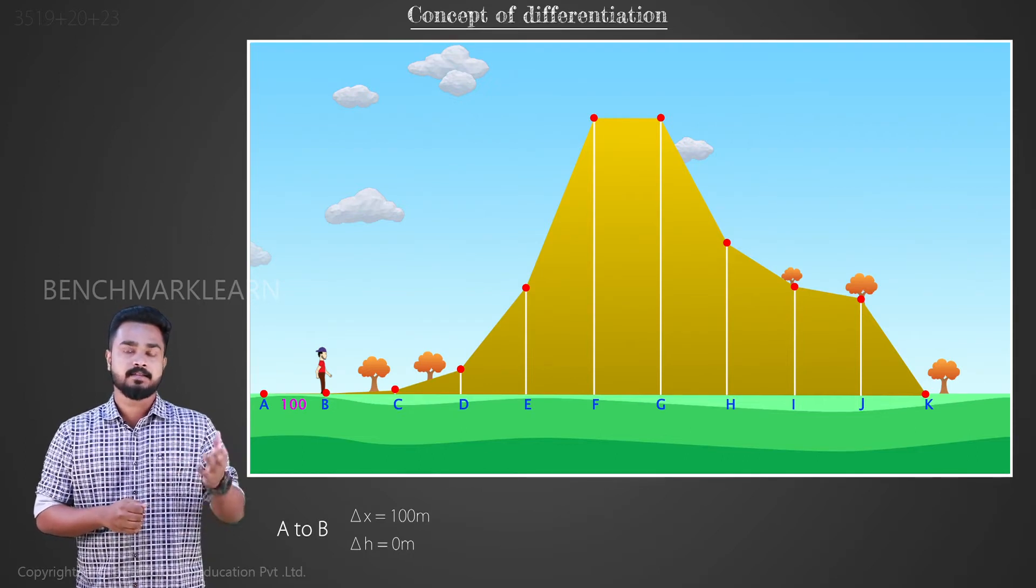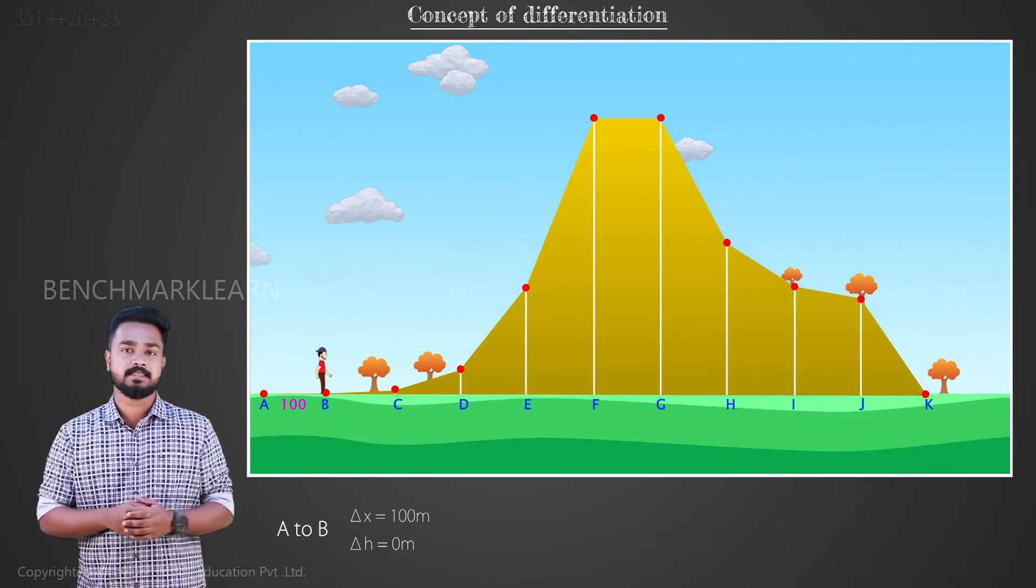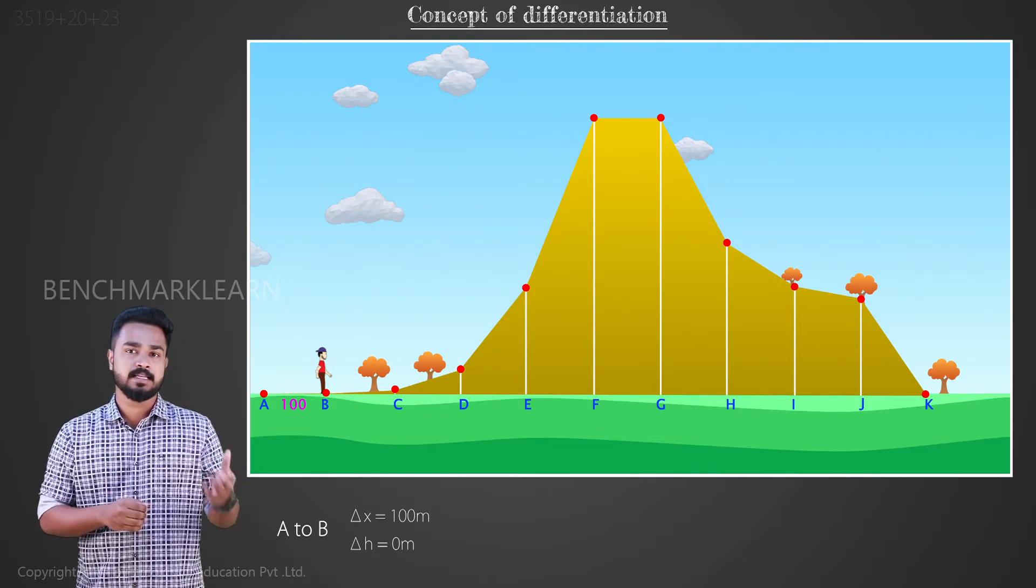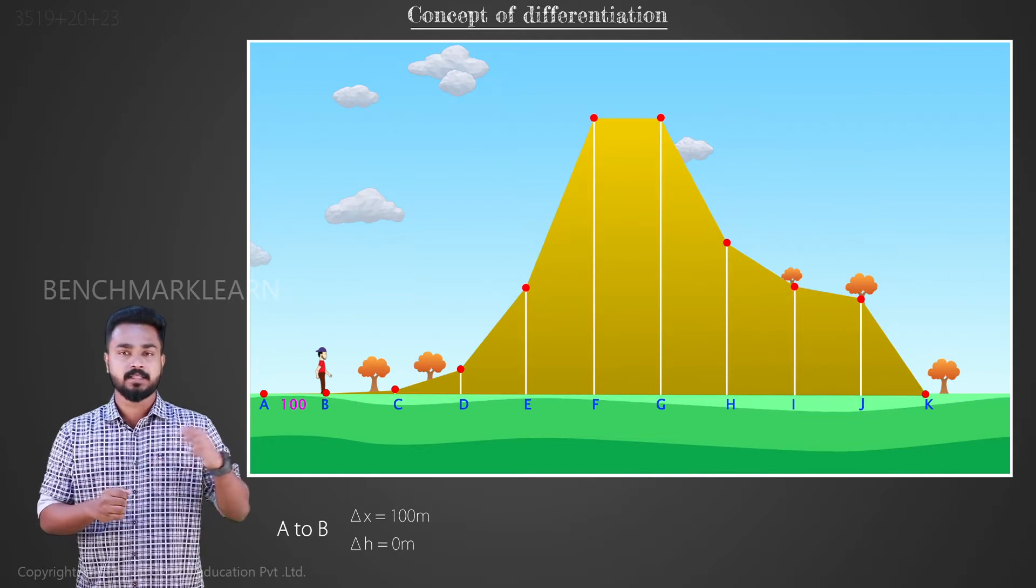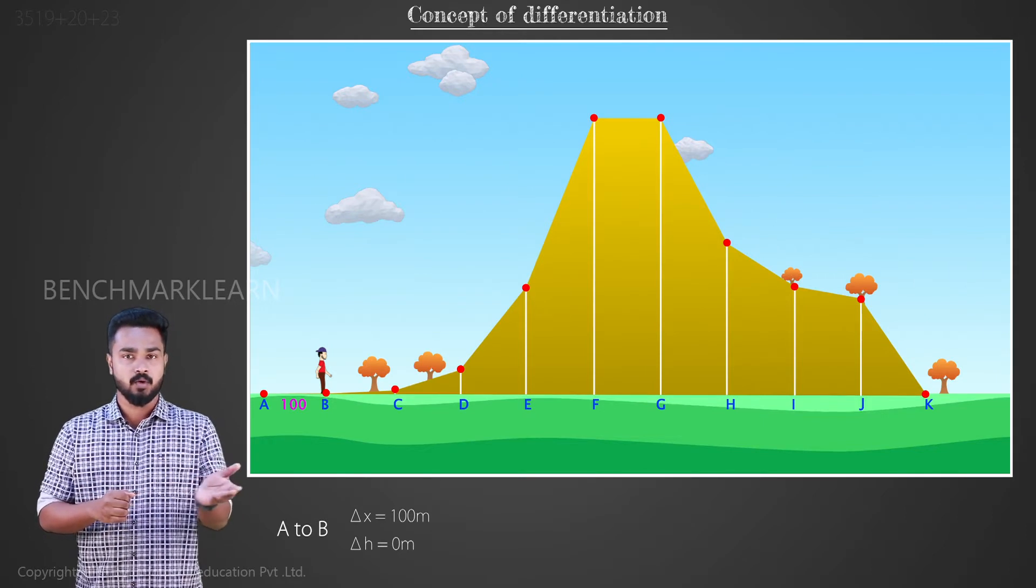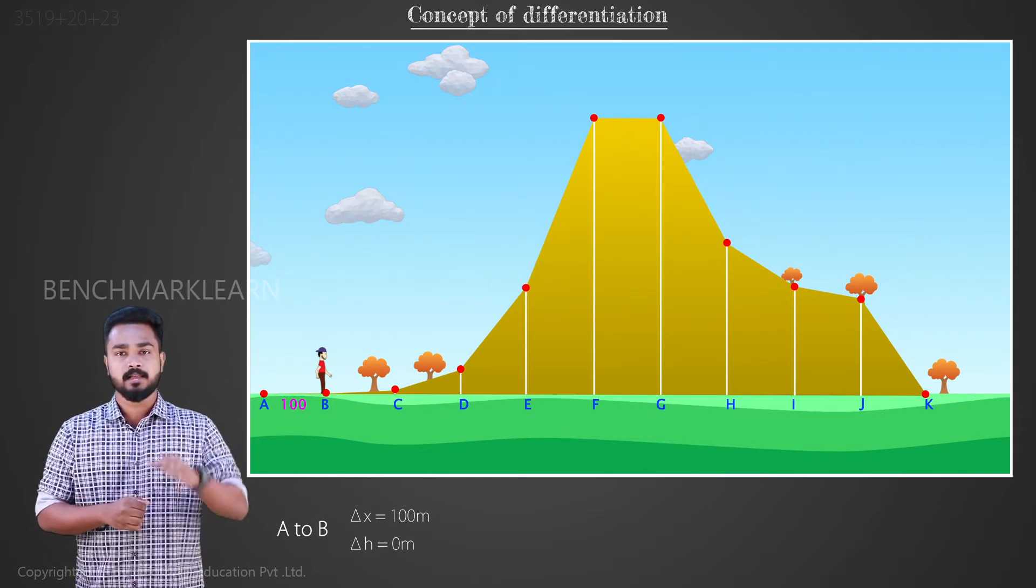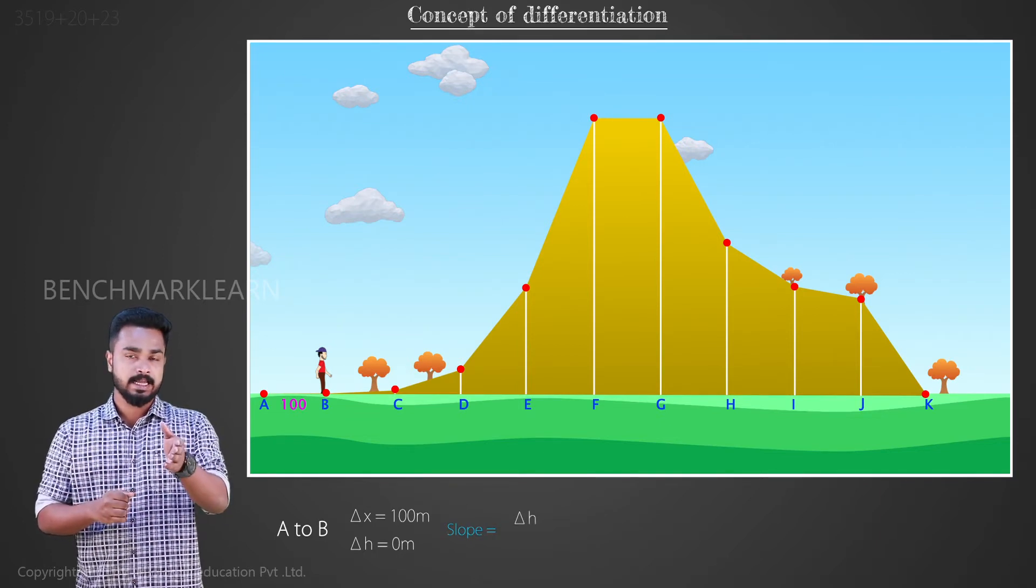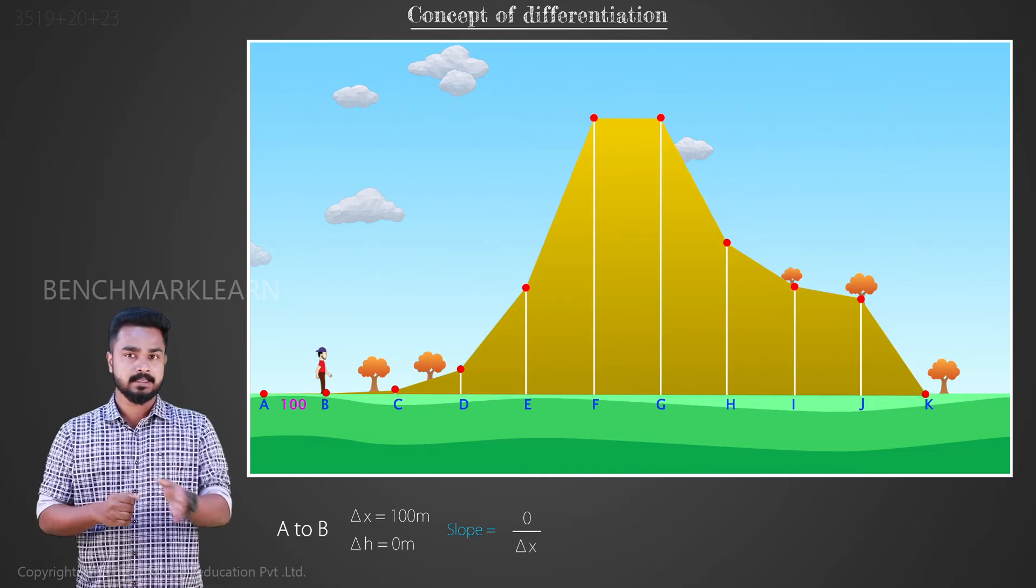The vertical distance travelled or the height difference ΔH is 0. So we can say that the rate of change of the height with respect to the distance travelled horizontally, or simply the slope of the hill from A to B, which is ΔH by Δx, is 0.